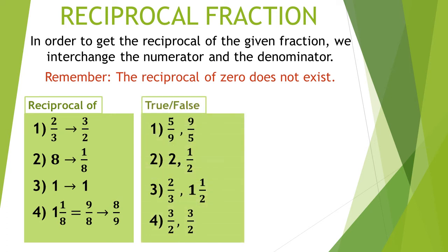Let us practice — state whether these are reciprocals of each other. Question 1: 5 upon 9 and 9 upon 5 — the answer is true. Question 2: 2 and 1 upon 2 — the answer is true. Question 3: 2 upon 3 and 1 1 upon 2. Since 1 1 upon 2 is a mixed number, first convert to improper fraction: 2 1s are 2 and 2 plus 1 is 3, so the fraction is 3 upon 2. Now 2 upon 3 and 3 upon 2 are reciprocals of each other, so the answer is yes.